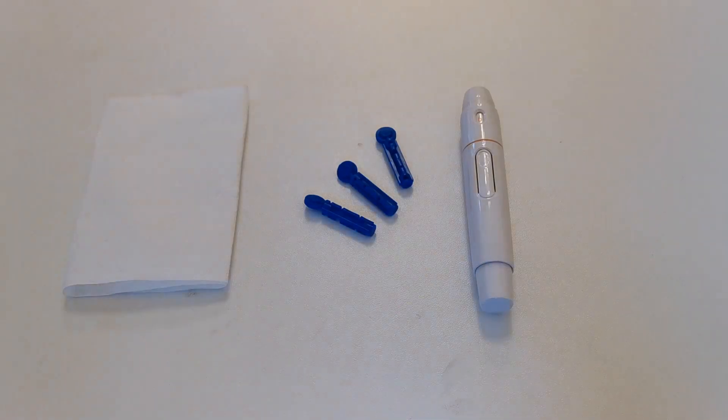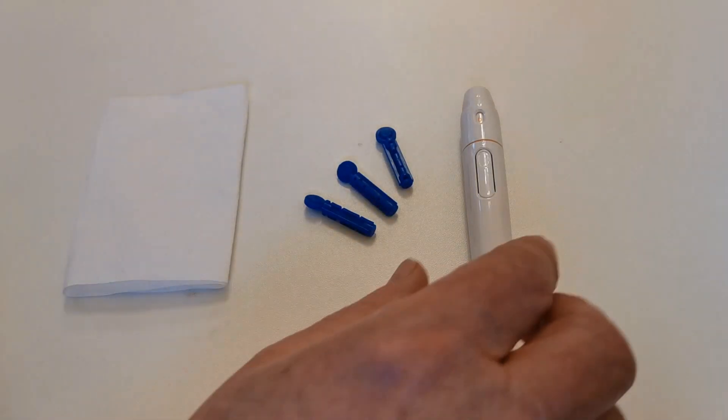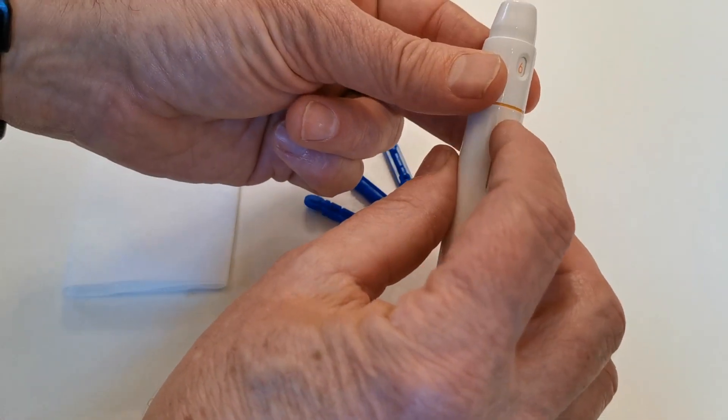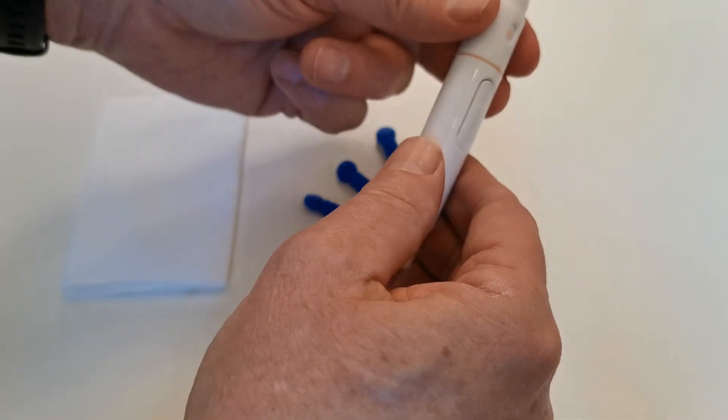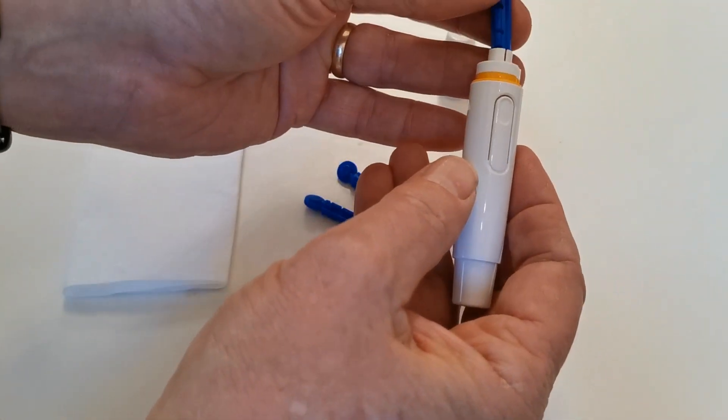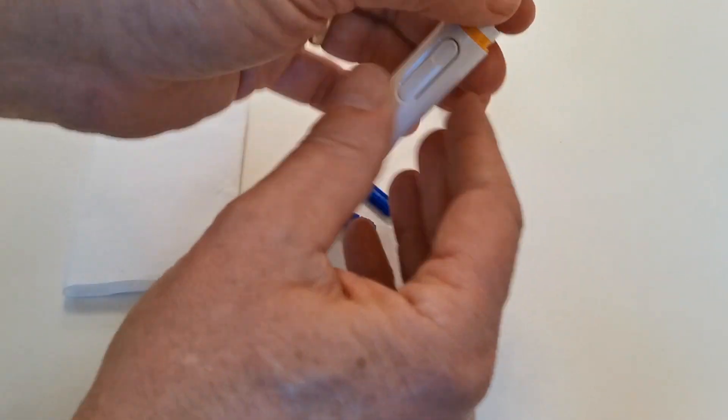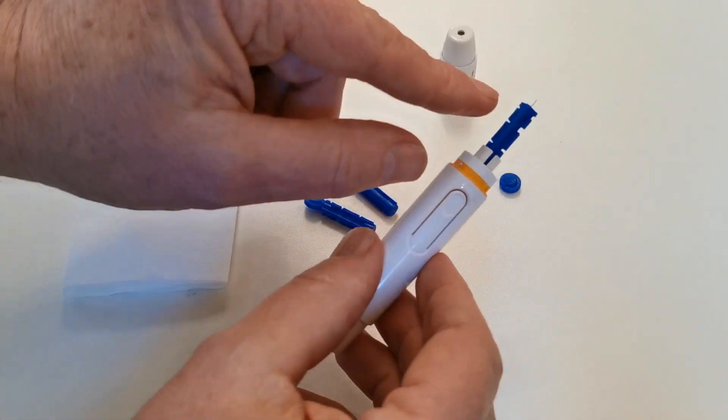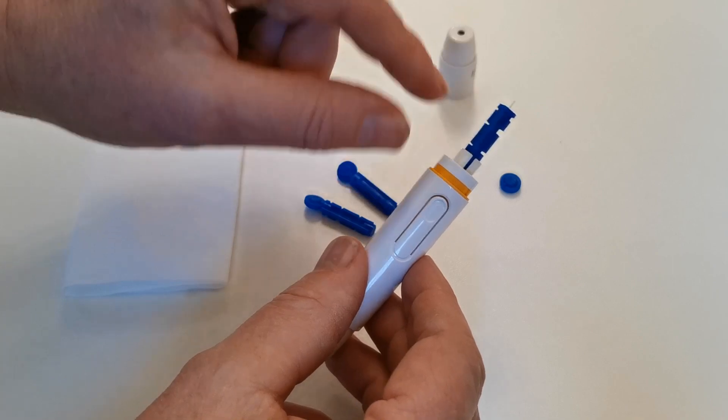In this section we're going to show you how to correctly use one of these auto-lancing devices. They're spring-loaded little devices. Pull back on the spring and release the trigger to fire the lance. When you're ready to do the test, remove the cap and fit one of the lances into the barrel.